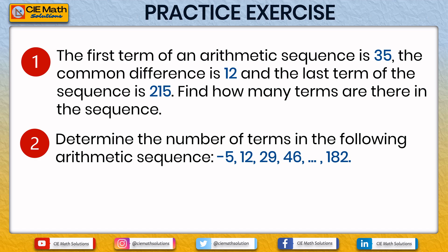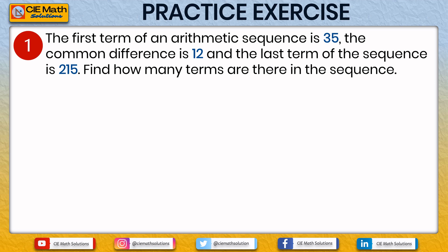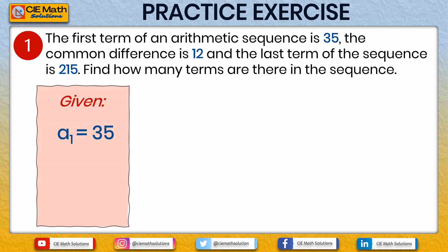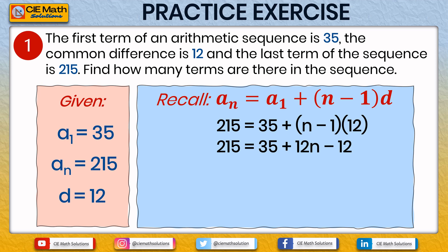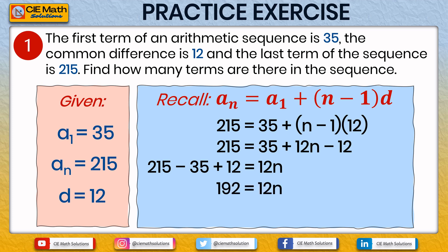Now let us have the answers. For the first item, the given data is: first term 35, last term 215, and common difference 12. Substituting into the nth term formula: 215 equals 35 plus n minus 1 times 12. Simplifying: 215 minus 35 plus 12 equals 12n, which gives 192 equals 12n. Dividing both sides by 12, n equals 16. Therefore, there are 16 terms in this arithmetic sequence with common difference 12, first term 35, and last term 215.